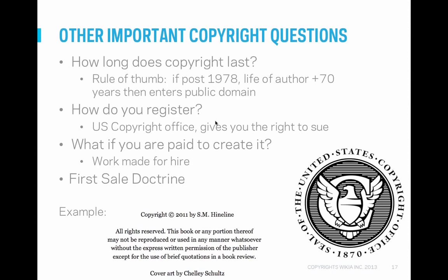Copyright law is a very complicated area, and there are a lot of things we don't have the time or scope to discuss. But I'm going to mention a few other concepts briefly. The term of copyright — how long does it last? This is actually a very difficult and complicated question. But for right now, the short answer is that if the work was created after 1978 by a single person, the copyright will last for the life of the author plus 70 years. And when that term is over, the work will enter the public domain.